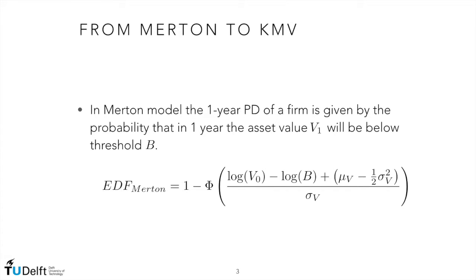We can use Merton's model in order to understand the most important characteristics of Moody's KMV. Let's define the EDF according to Merton's model — this is the probability of default within one year. To obtain this, we start from the quantity we know: we set capital T equal to 1, so T disappears from the equation, and then we use the symmetry property of the normal distribution so that we can express our probability in terms of a survival function.